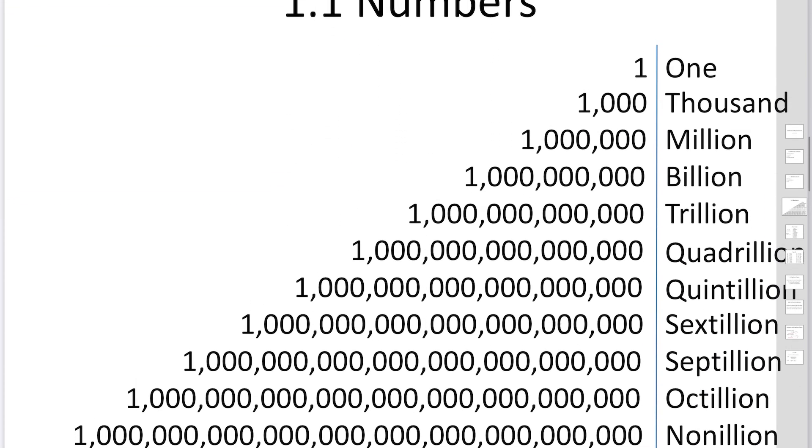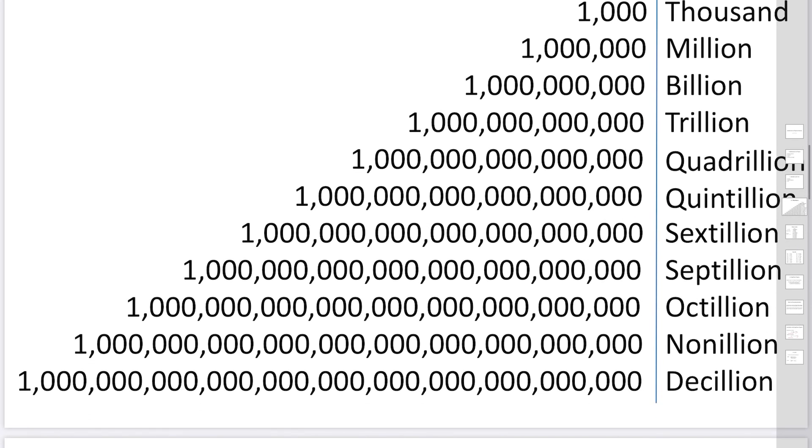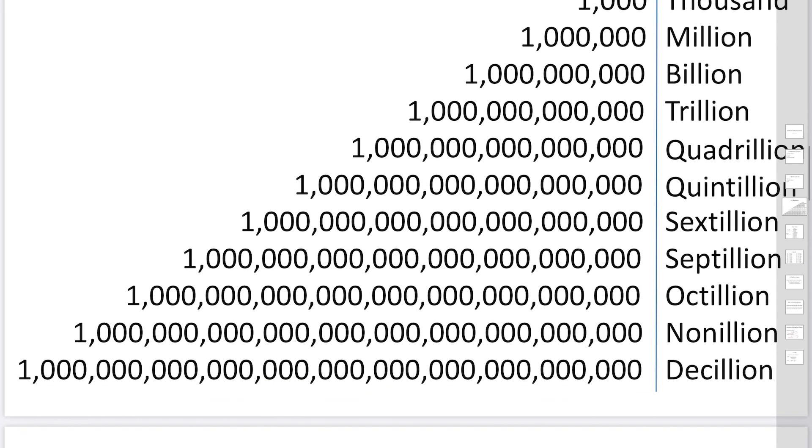To describe big numbers, we often add many zeros. One, thousand, million, billion, trillion, quadrillion, quintillion, sextillion, septillion, octillion, nonillion, and decillion. It's quite difficult to count the number of zeros, especially for decillions.